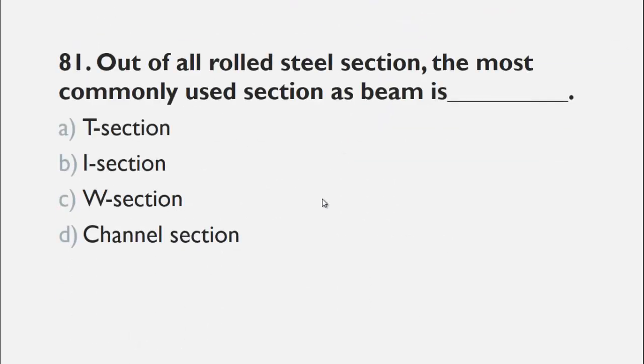MCQs number 81 is, out of all the rolled sections, the most commonly used section as beam is. The choices are a T section, b I section, c W section and d channel section.